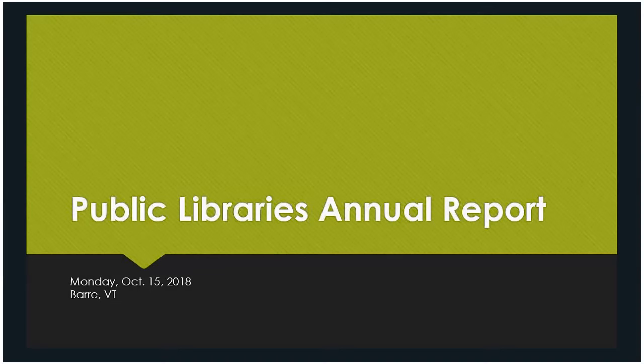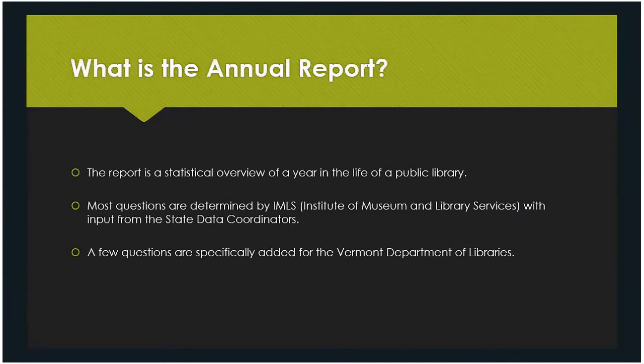So, what is the annual report? The annual report is basically a statistical overview of what every library is doing — has done during the last year. It tries to get at basically everything that you can get statistically easily: all of your holdings, all of your circulation numbers, all of your programming numbers, and then all the financials that are coming into and out of the building. That's what we're aiming to capture.